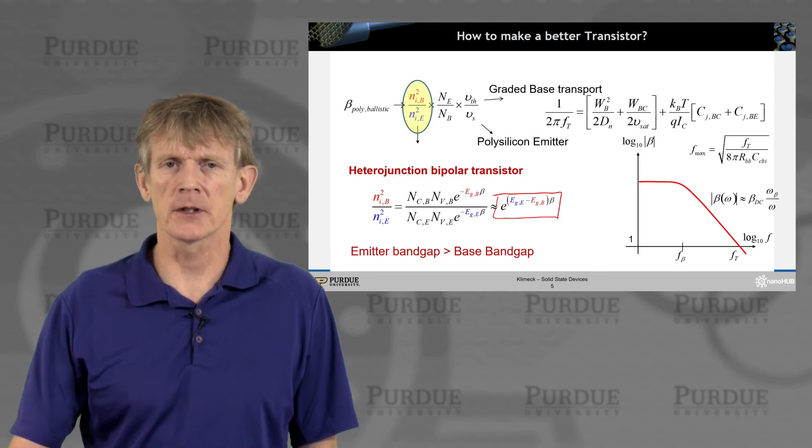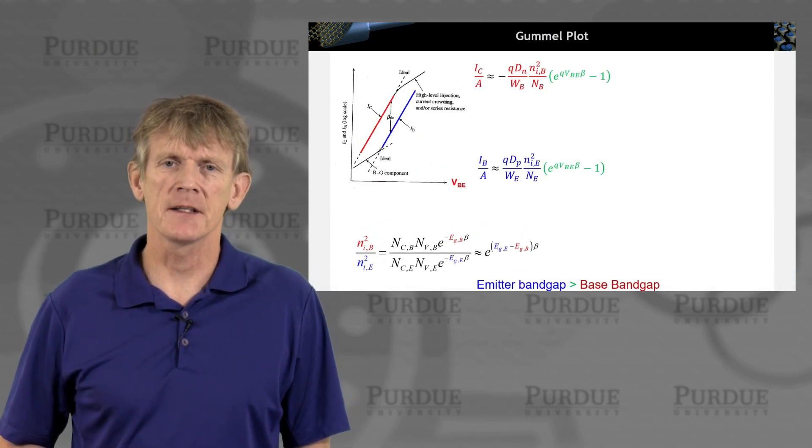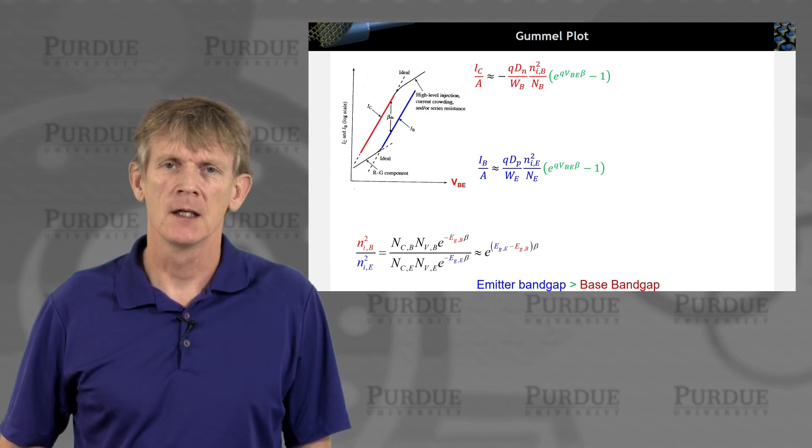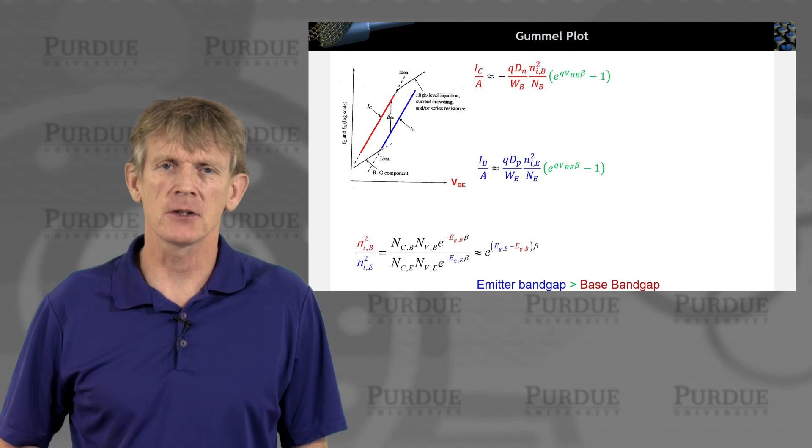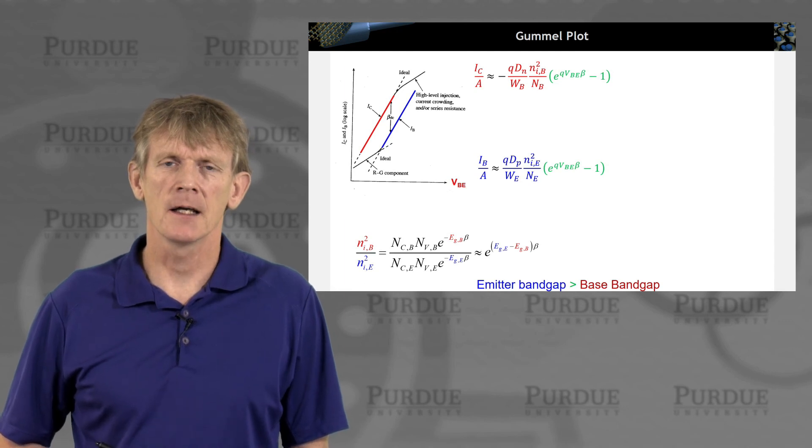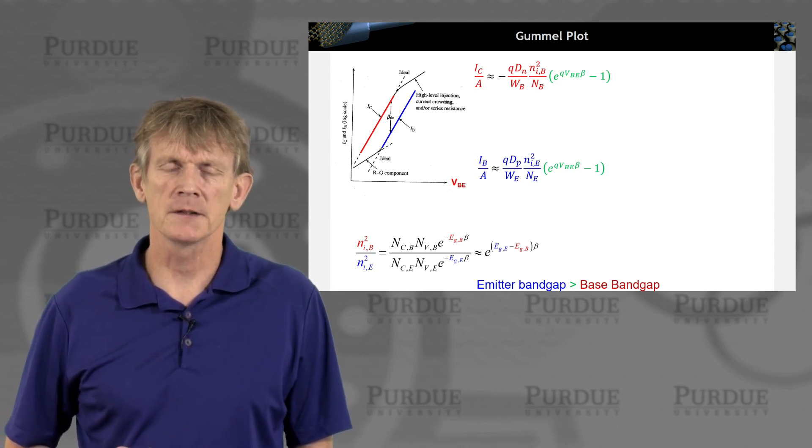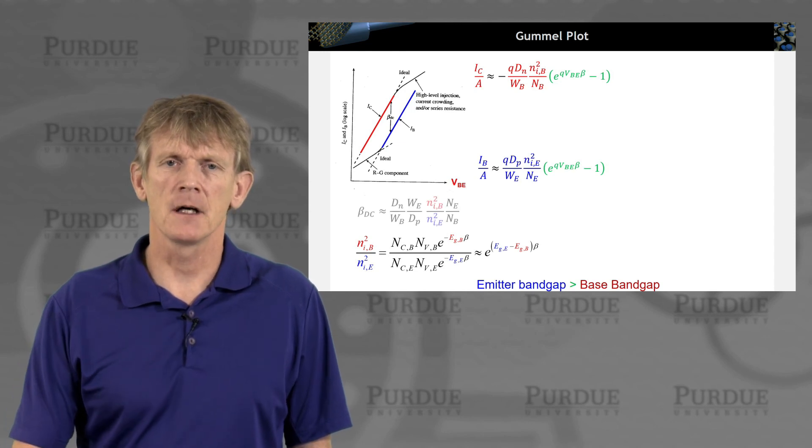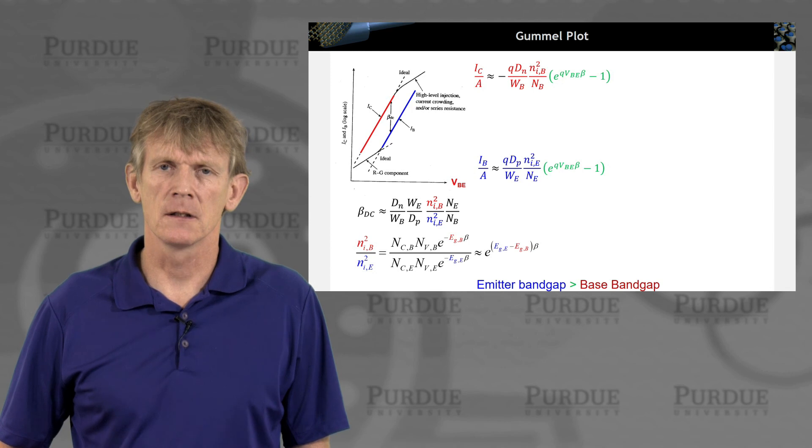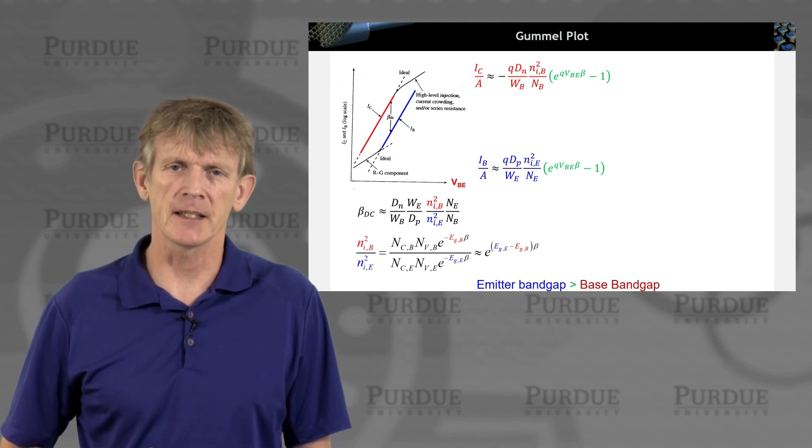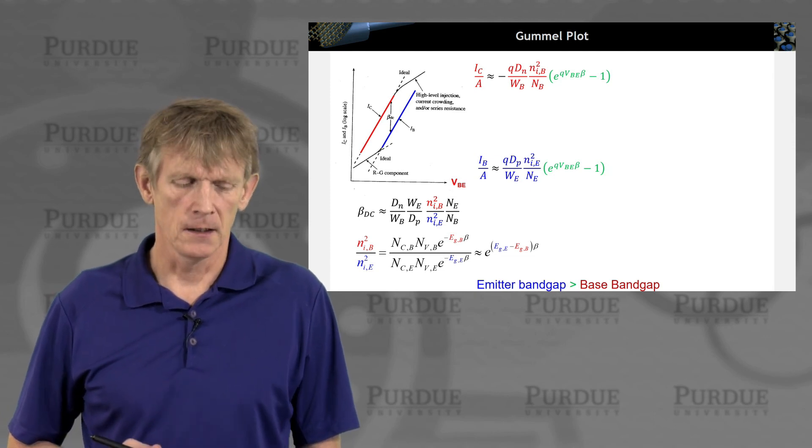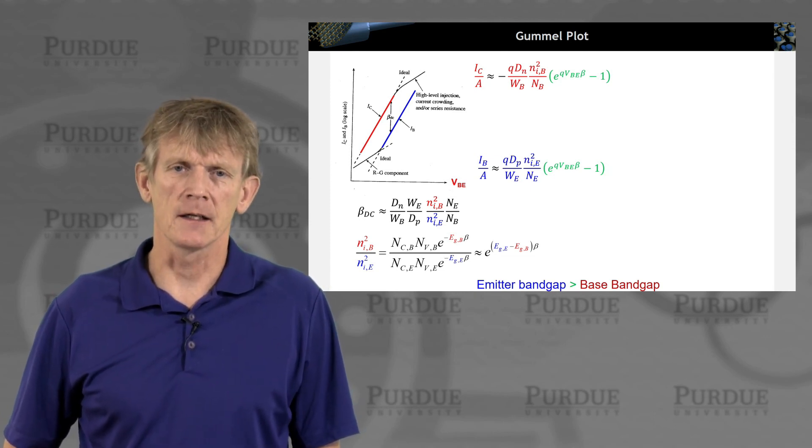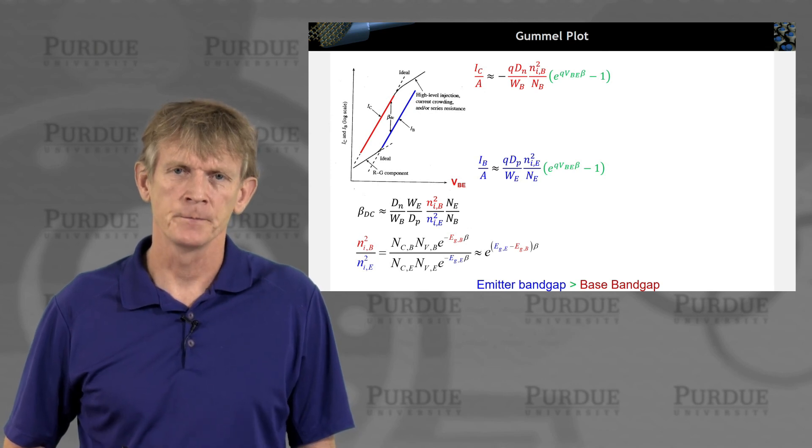All right. So why would that be? Let's look at a little bit of where this came from. Where did this expression come from? Remember this Gammel plot? We plotted the base current, the collector current, and we had expressions for the forward biased base emitter junction, reverse biased collector junction, and had written down the currents for the collector current. The base current took the ratio and have this beta DC. So that's how this term NiB squared and NiE squared, that's where this came from.